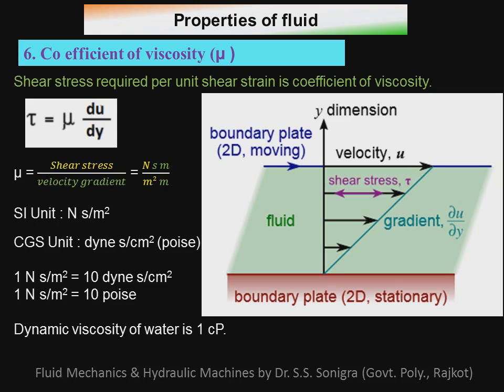The coefficient of viscosity mu states the shear stress required per unit velocity gradient. From tau = mu × du/dy, we get mu = shear stress / velocity gradient. Shear stress is in Newton per meter square and velocity gradient is in (meter per second) per meter, so the unit of mu is Newton·second per meter square. The CGS unit is dyne·second per centimeter square, which is called poise. One Newton·second per meter square equals ten poise.